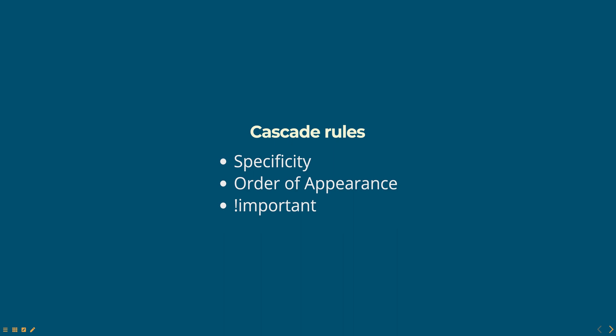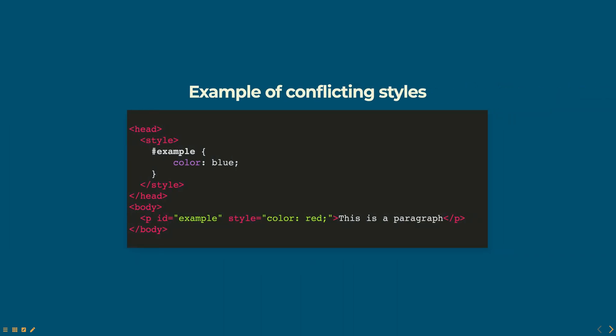Here is an example of conflicting styles. In this example, the style color blue is applied to the element with an ID of 'example' through an internal stylesheet. But the style color red is applied to the same element through an inline style. Since the inline style has a higher specificity, it will override the internal stylesheet and the text color will be red.